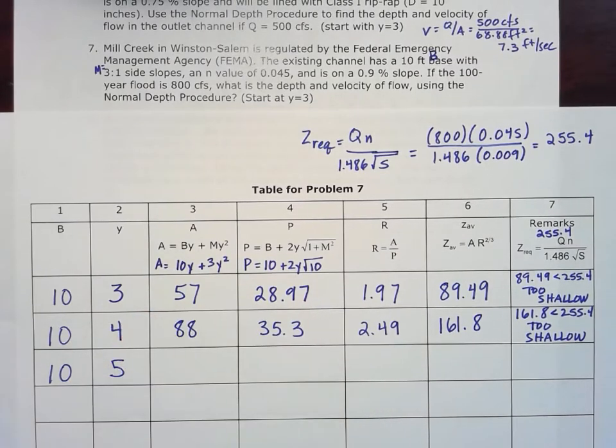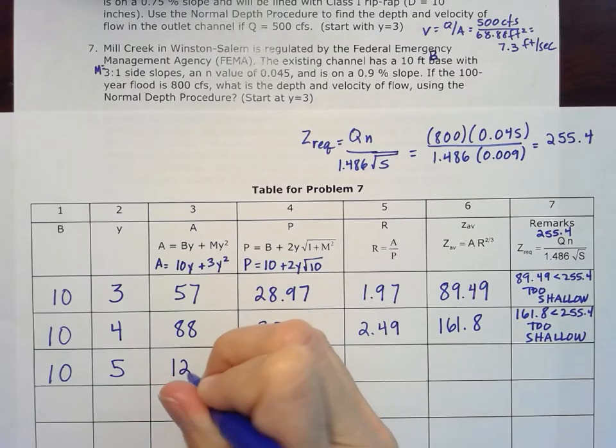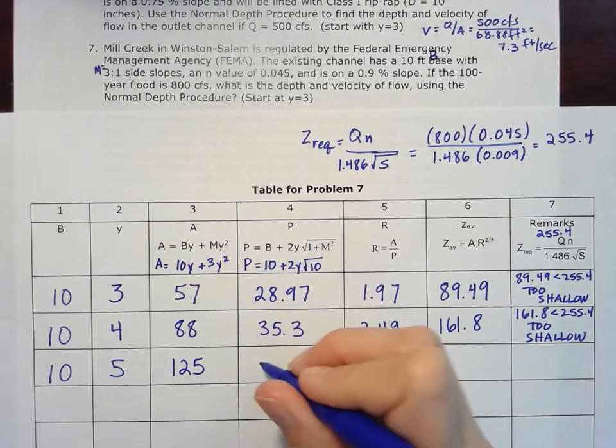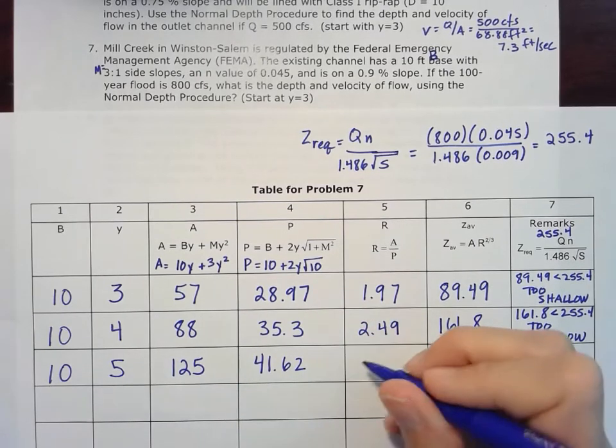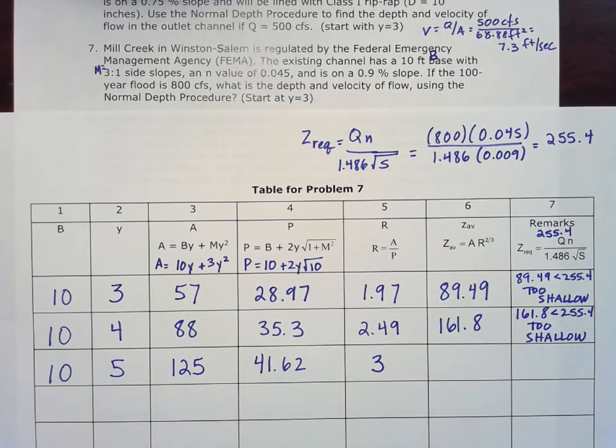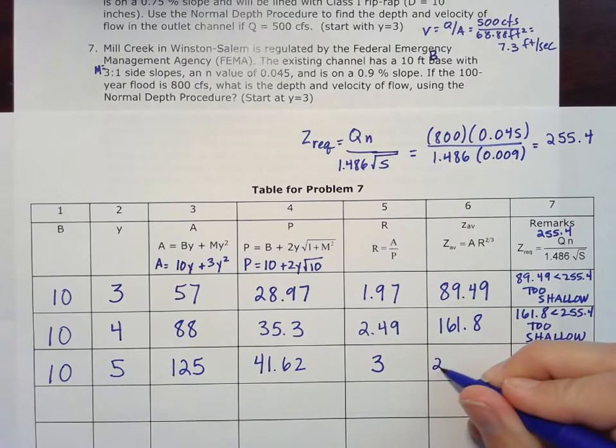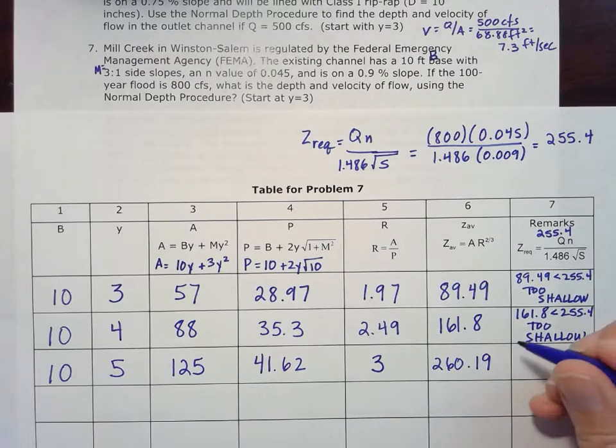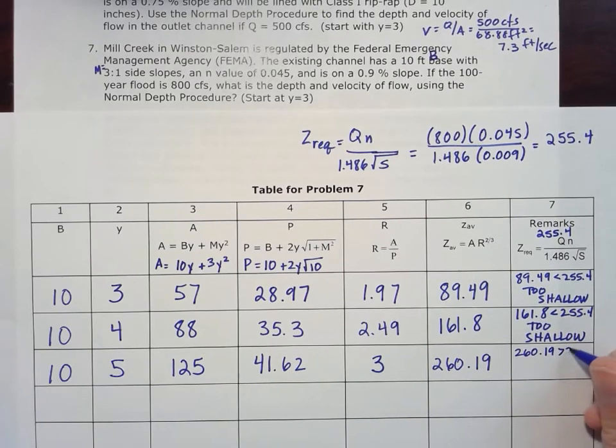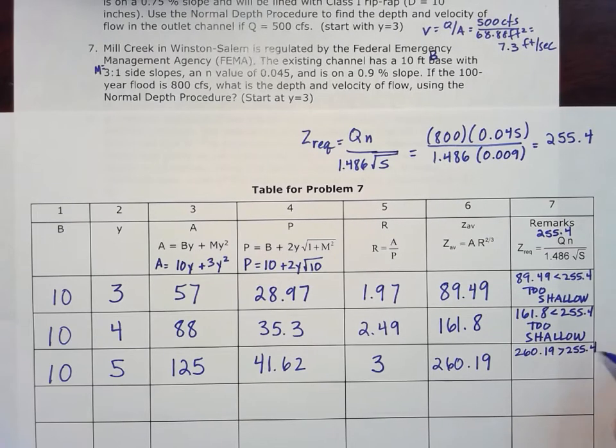Let's go up to 5 feet now and see what we get. So 5 feet gives us an area of 125 square feet, a wetted perimeter of 41.62, hydraulic radius of 3, and then that gives me a Z average of 260.19. So we're getting closer here, but now I've actually gone a little too high. 260.19 is greater than that 255.4, so I'm a little bit too deep here.